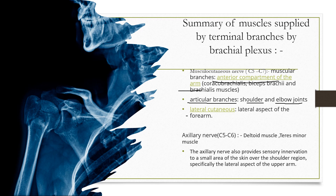The axillary nerve has a root value of C5 to C6. It supplies the deltoid muscle and the teres minor muscle. The axillary nerve also provides sensory innervation to a small area of skin over the shoulder region, specifically the lateral aspect of the upper arm.